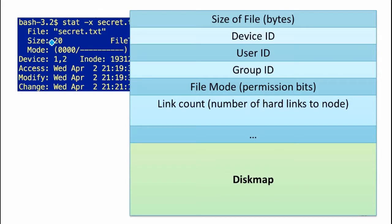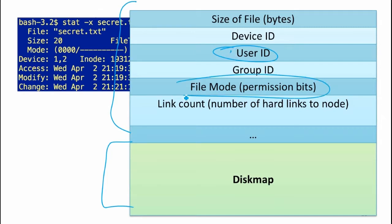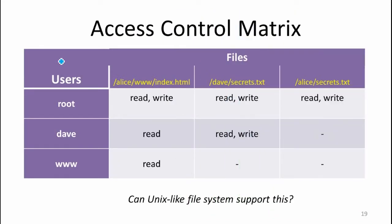All we have for a file is a fixed number of bits indicating what the owner can do, what a group can do, and what anyone else can do. What we might like is an access control matrix — taking all potential users and all potential files and deciding permissions for each combination. For example, Alice could read and write a file, Bob could read it, but Colleen couldn't. We can't really do that with the Unix permission model, other than by creating many groups.